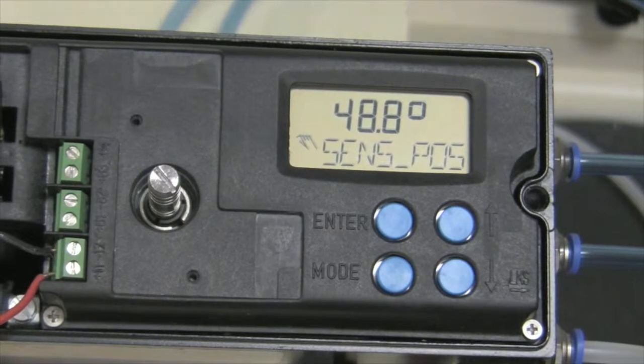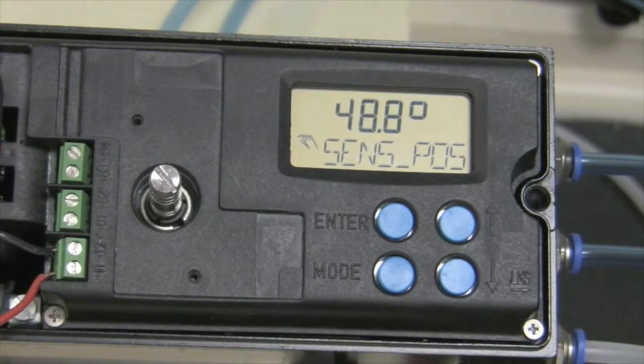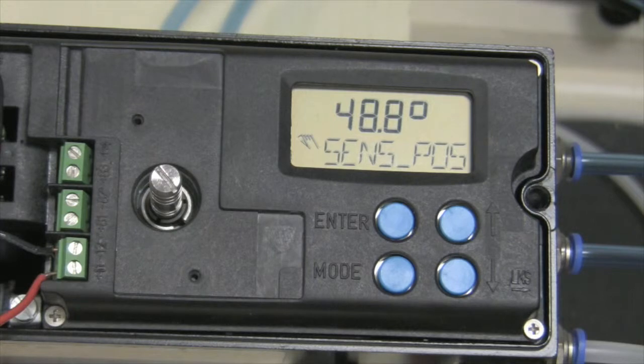Now that we have our positioner mounted up, we input a 4 to 20 milliamp supply to it. When the screen displays for the first time, you will see a sense position.